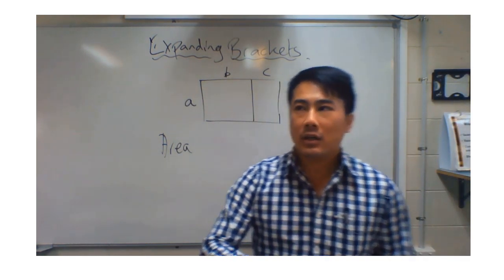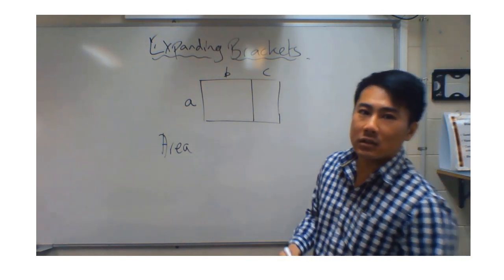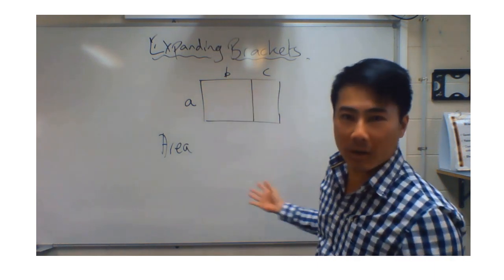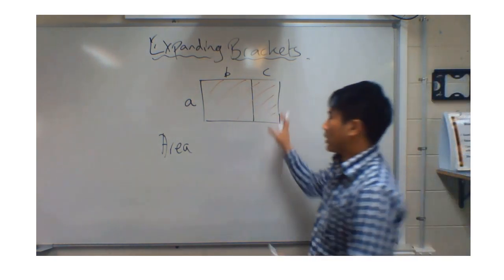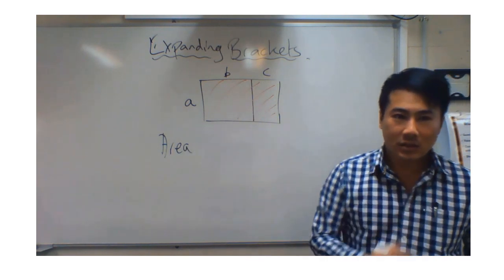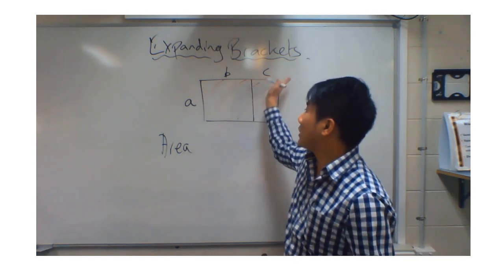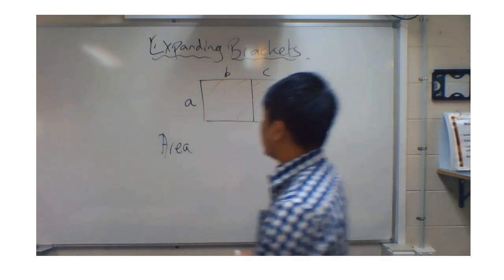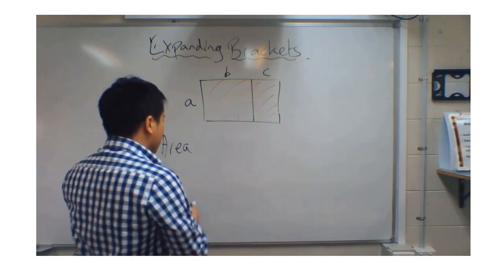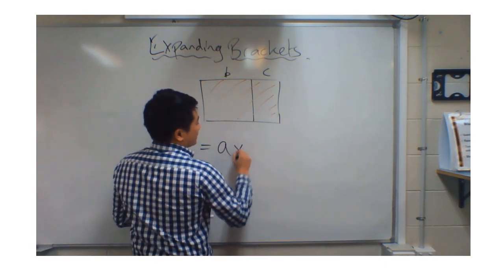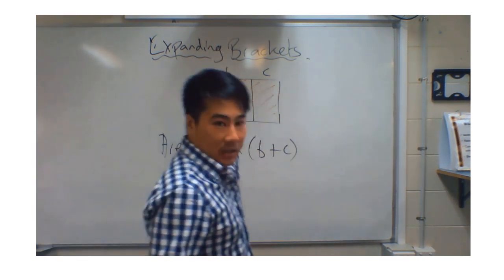What do we mean by the area? Think back to year 5 or 6 maths. Area is the space that the shape occupies. So I'm asking you for the area of this rectangle. The formula to calculate the area of a rectangle is length times width. So that's A times the length B plus C. The area in this case is A times (B plus C). Remember, area is length times width.